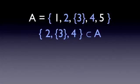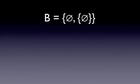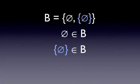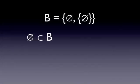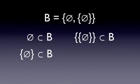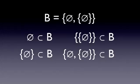Let's look at another set. In this case, B is a set that contains 2 elements. Those elements are the empty set and a set that contains the empty set. This set also contains 4 subsets: the empty set, a set containing the empty set, a set containing the set containing the empty set, and the complete set itself. Notice that when we are dealing with the empty set, we don't use braces to indicate that the empty set is a subset of A. This is because the empty set is already a set, and when dealing with a set that contains the empty set, we only use one pair of braces.